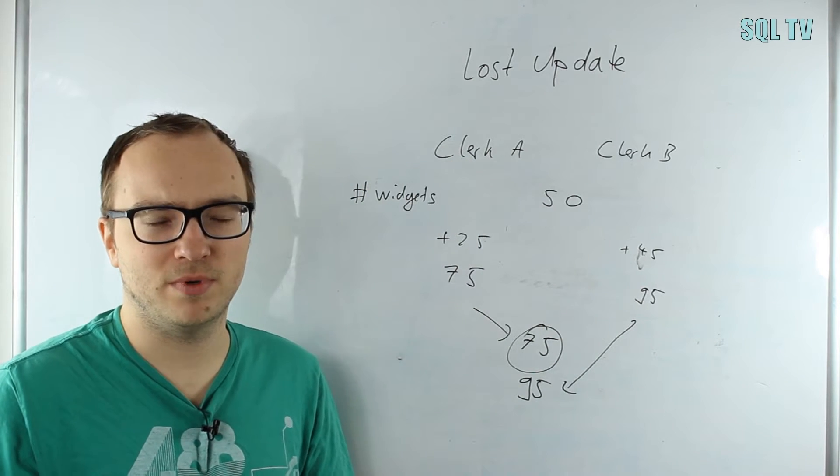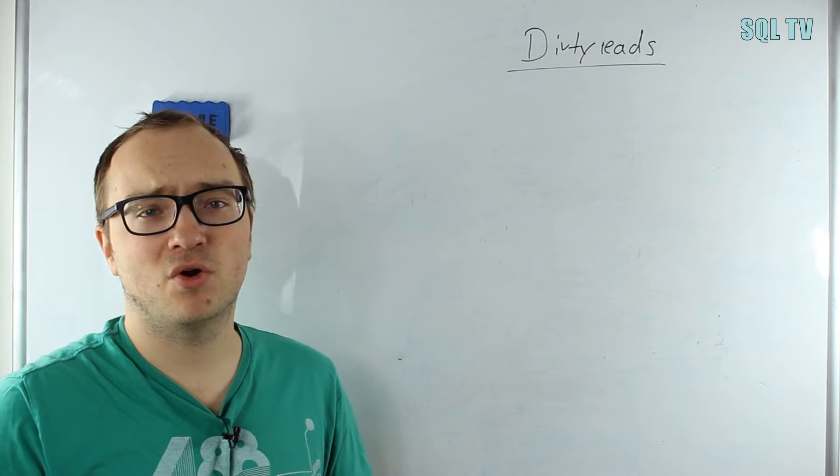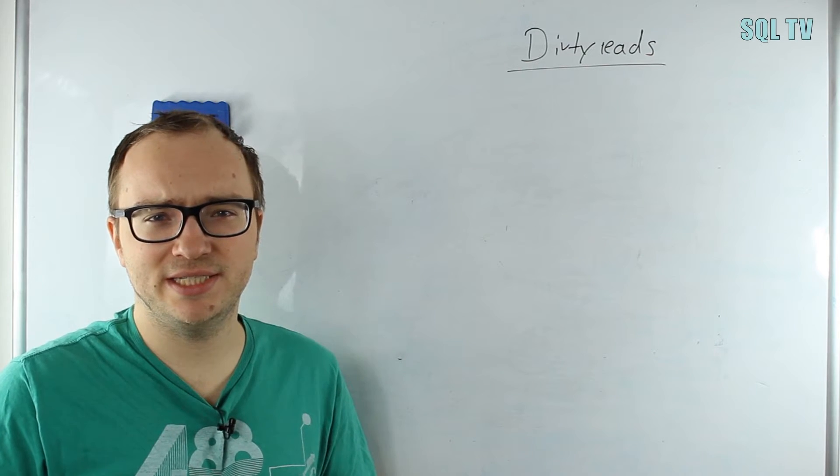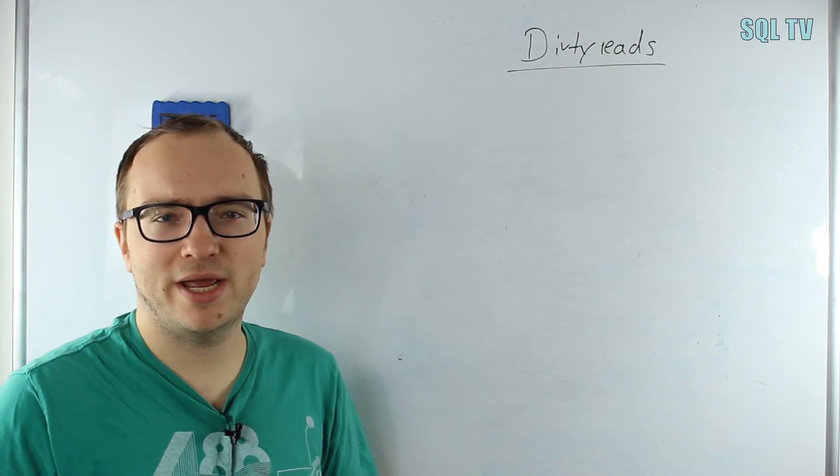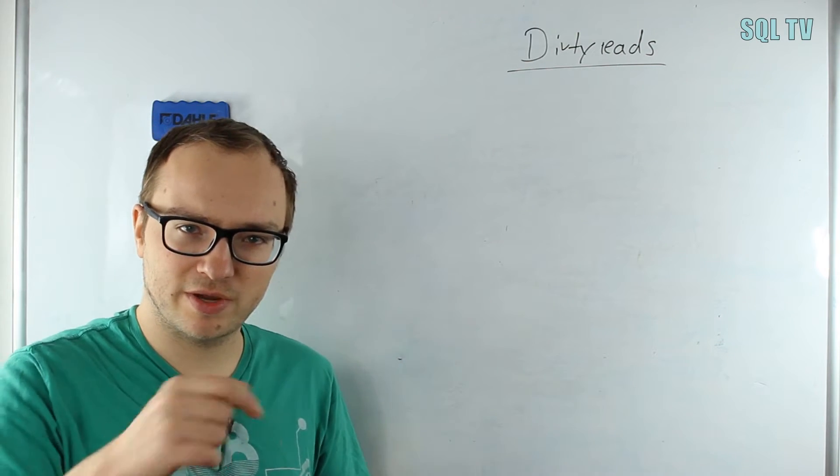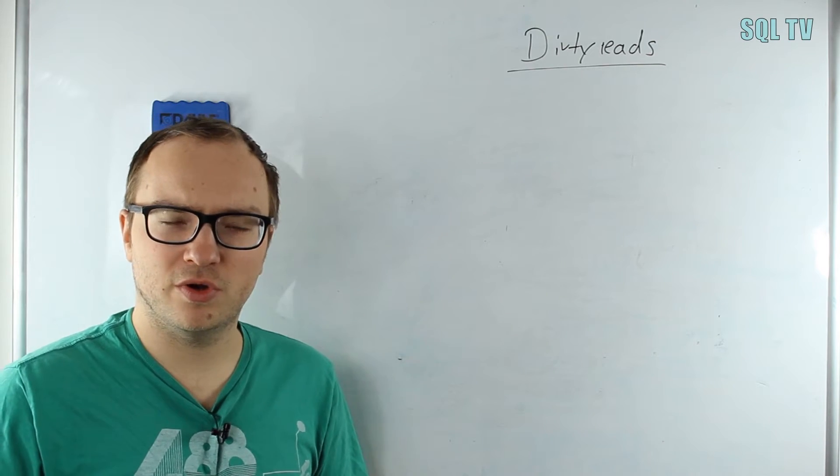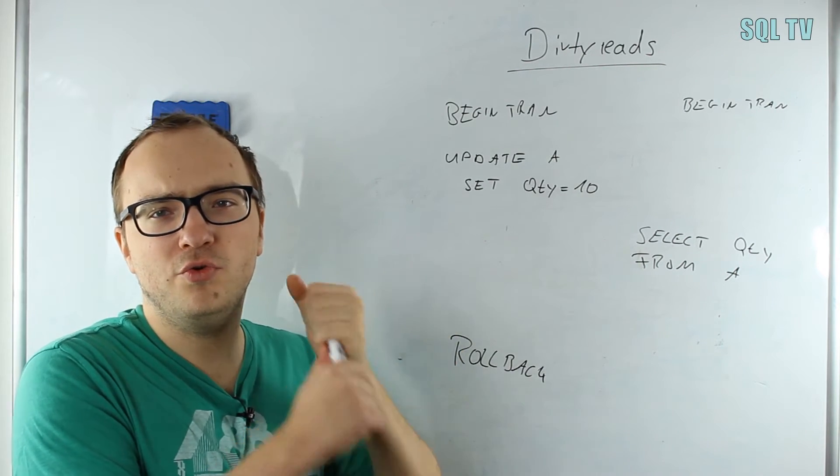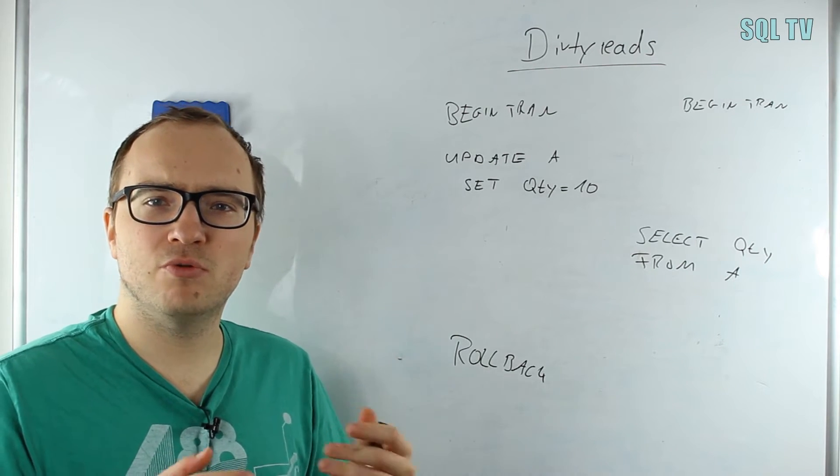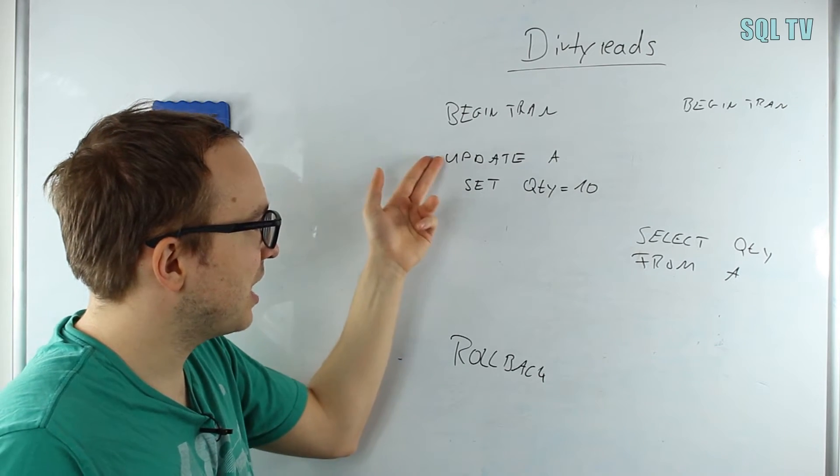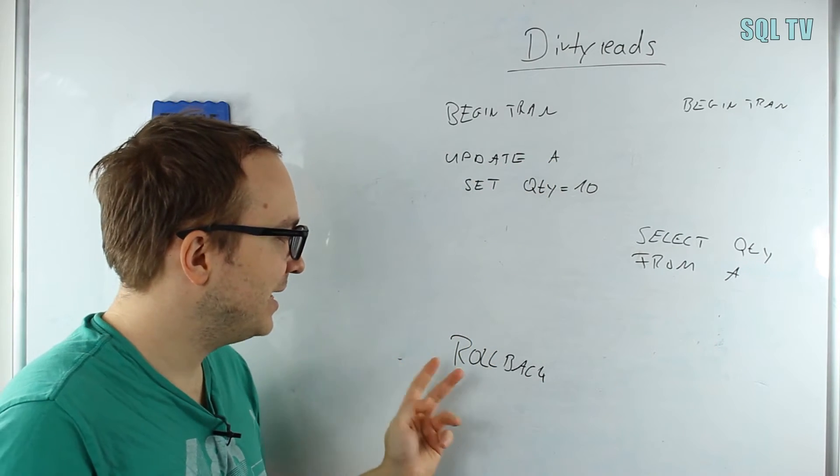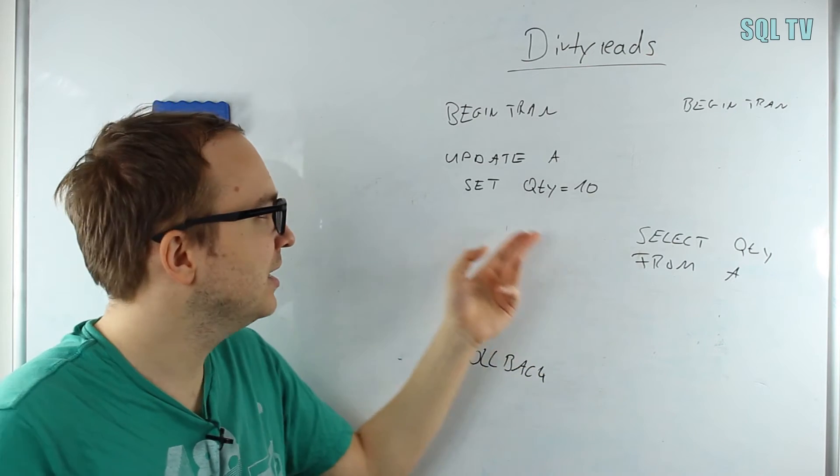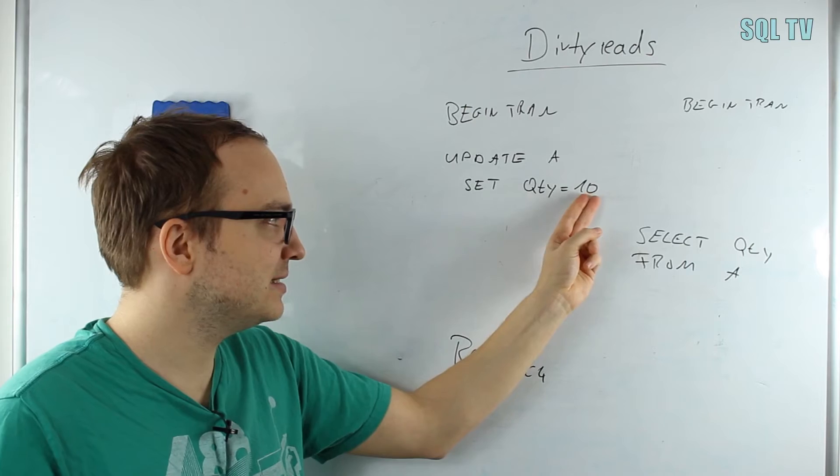Let's come to the next one: dirty reads. I own a website called www.dirtyread.de where I explain it textually, so please have a look at it. For the video, I want to show you an example. A dirty read means transaction A reads a value from transaction B that is not committed yet. Here we have the left transaction that updates a value quantity on table A.